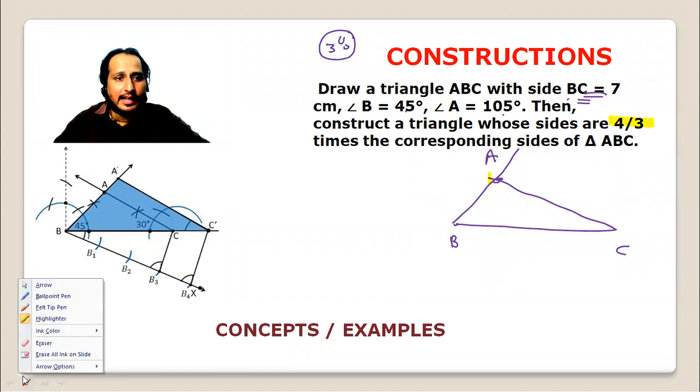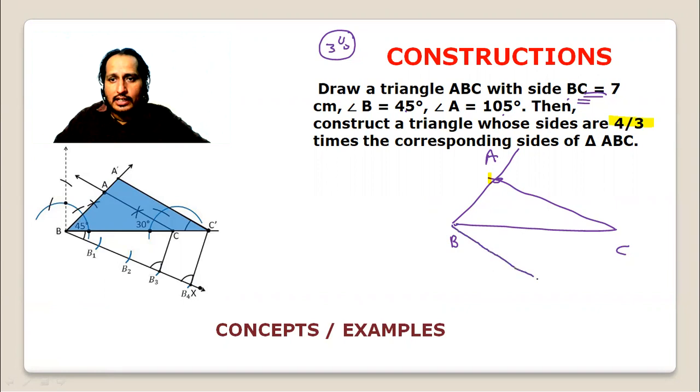You have to make an acute angle at B to the opposite side. And how many parts divide it? 4 parts. How many parts? 4 by 3, so 1, 2, 3, 4 parts.